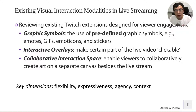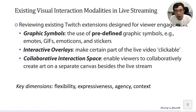Our analysis identified three categories of Twitch extensions designed for viewer engagement. First, graphic symbols, which use predefined graphic symbols such as emotes, GIFs, emoticons, and stickers — they are often predefined, so they are not flexible. Second, interactive overlays, which make certain parts of the live video clickable, but because they are often designed on a case-by-case basis, they are also not very expressive. Third, collaborative interaction space, which enables viewers to collaboratively create art on a separate canvas; however, it is not easy for users to keep track of the live stream, so they are easy to lose context.